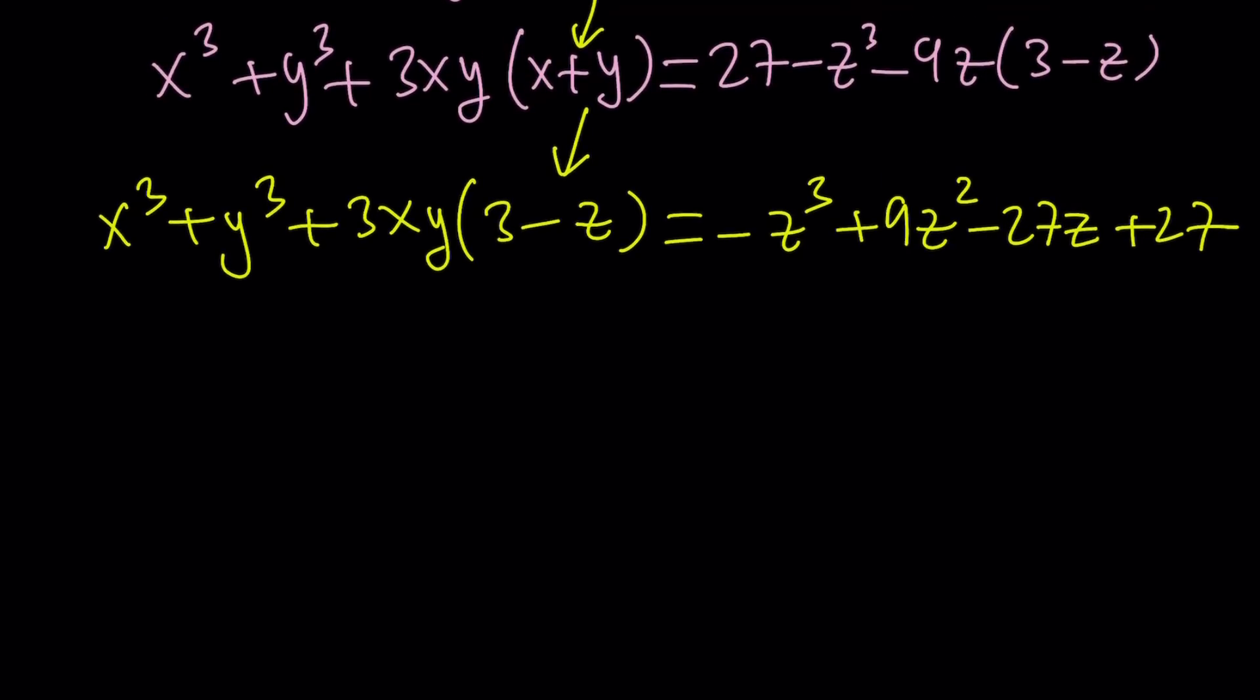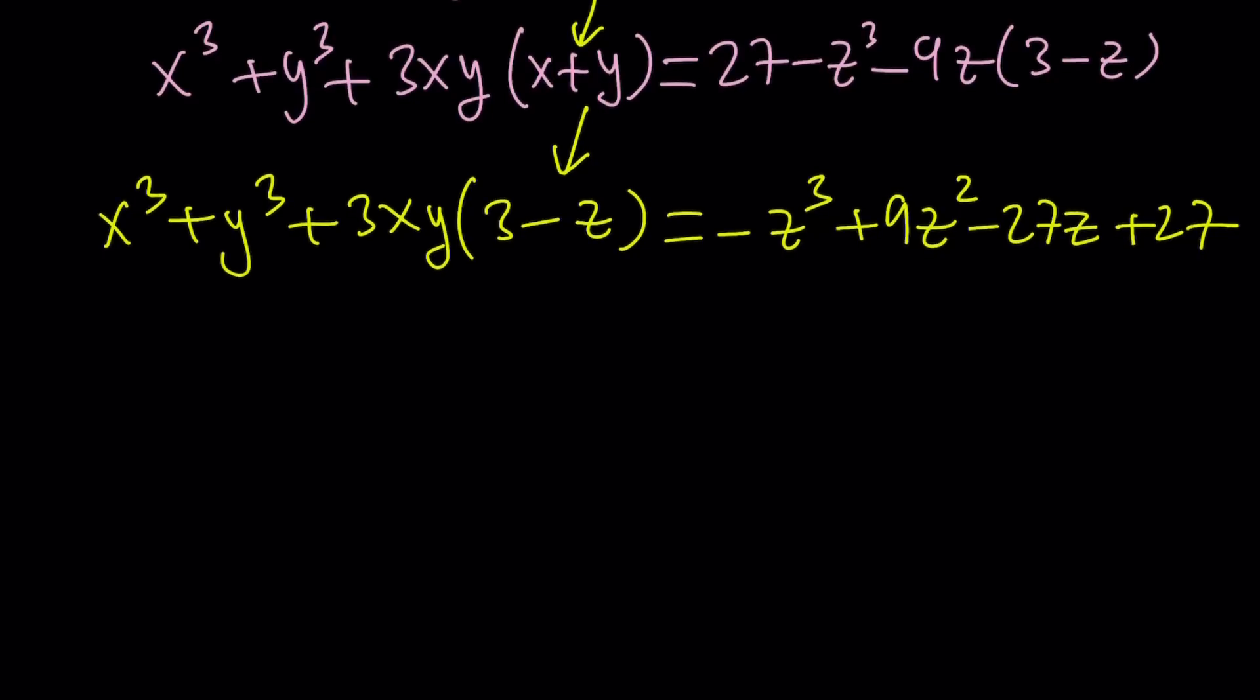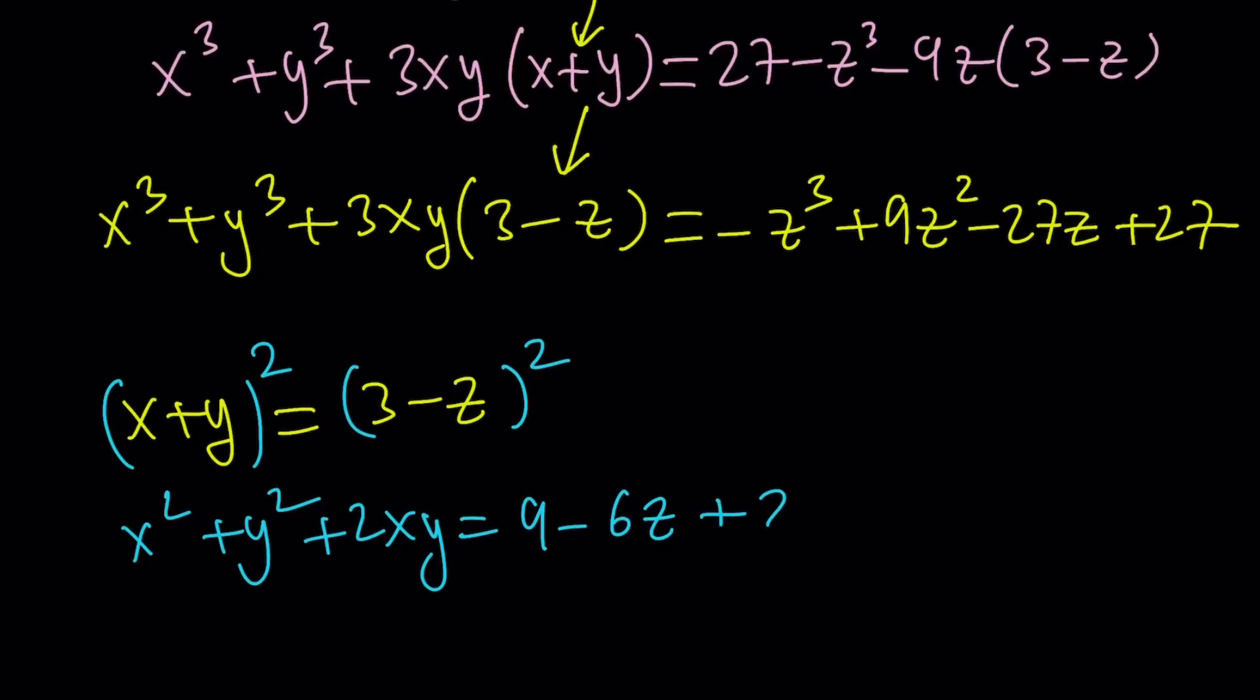Now let's find xy. Take x plus y, which is 3 minus z, and square both sides. We cubed it, and now we're going to square both sides. The idea is to get something for xy. We get x squared plus y squared plus 2xy equals 9 minus 6z plus z squared.